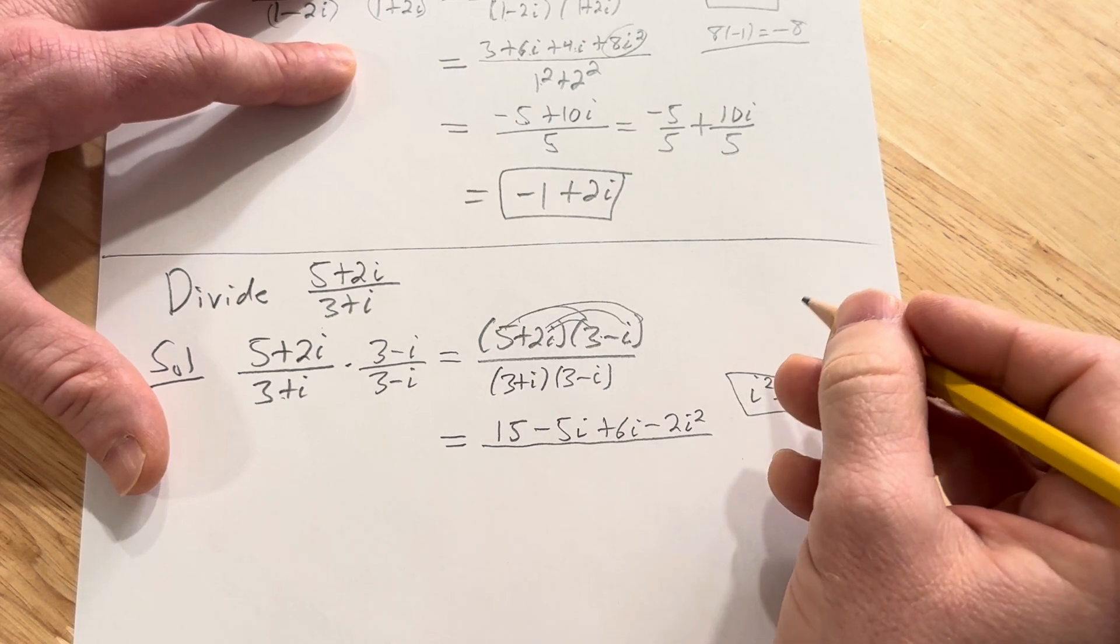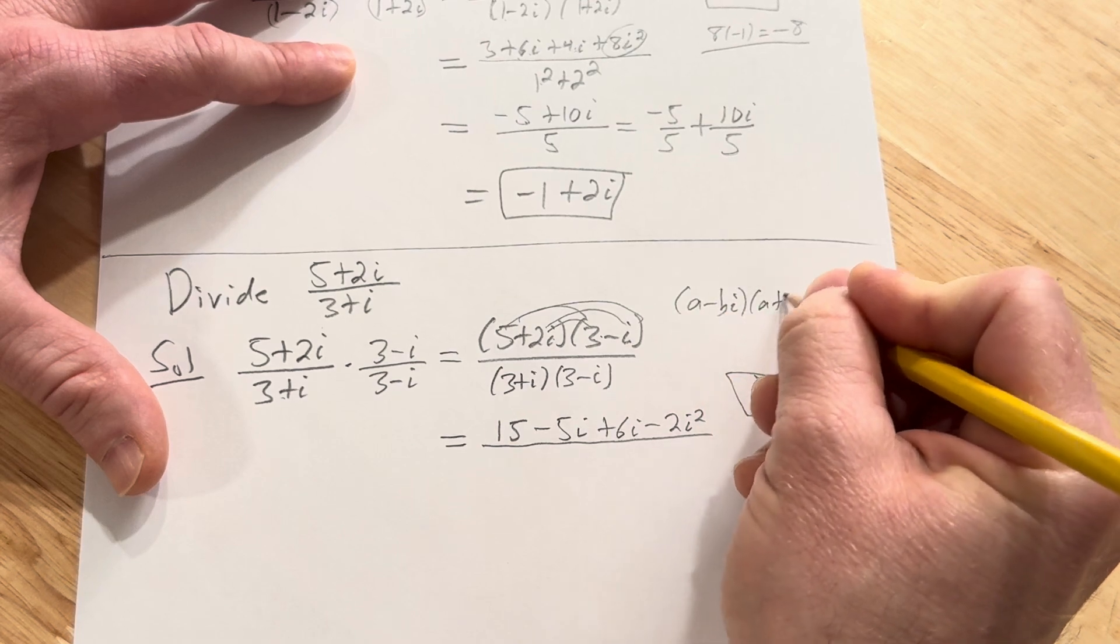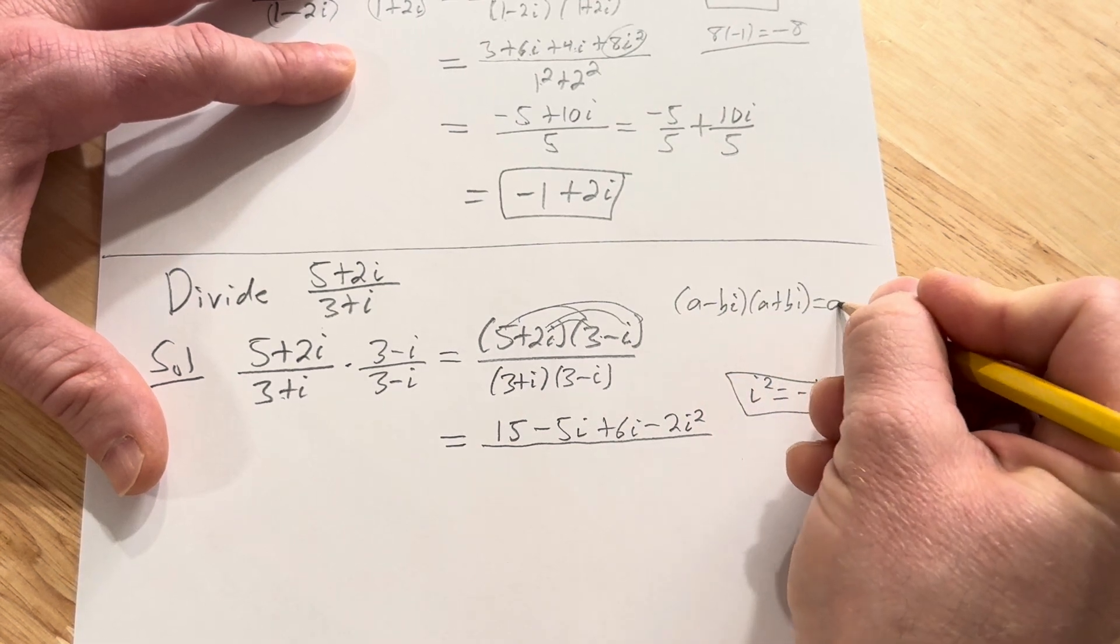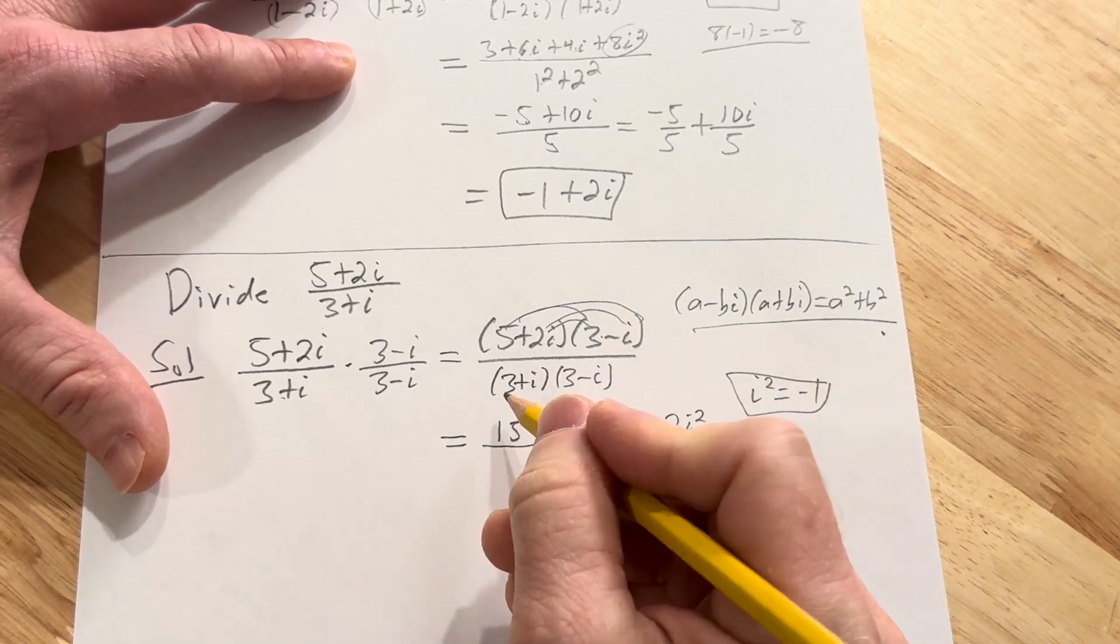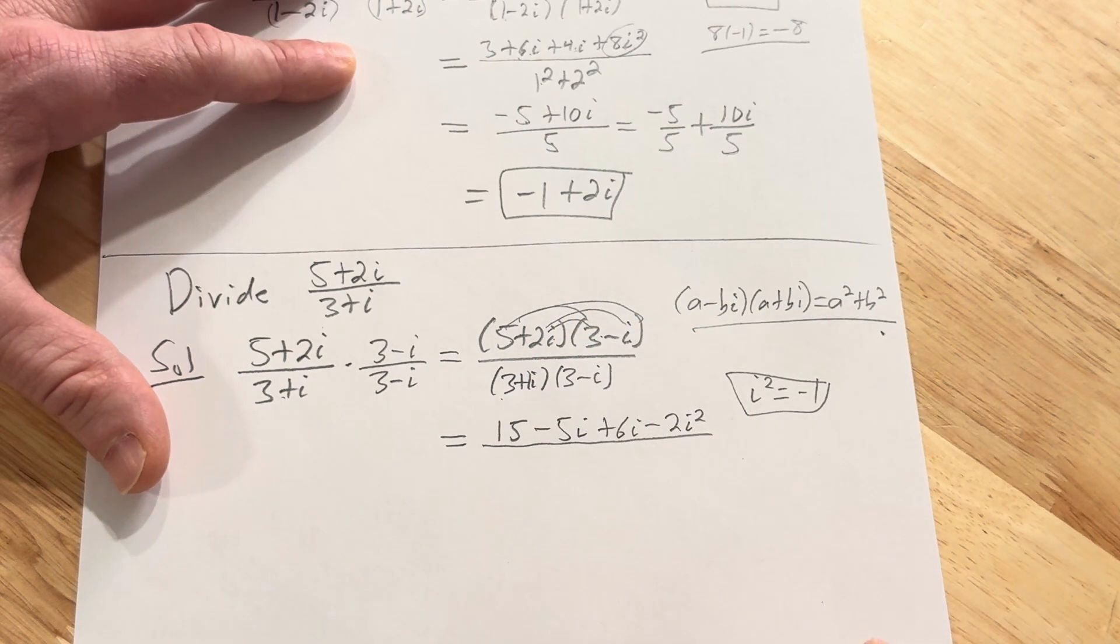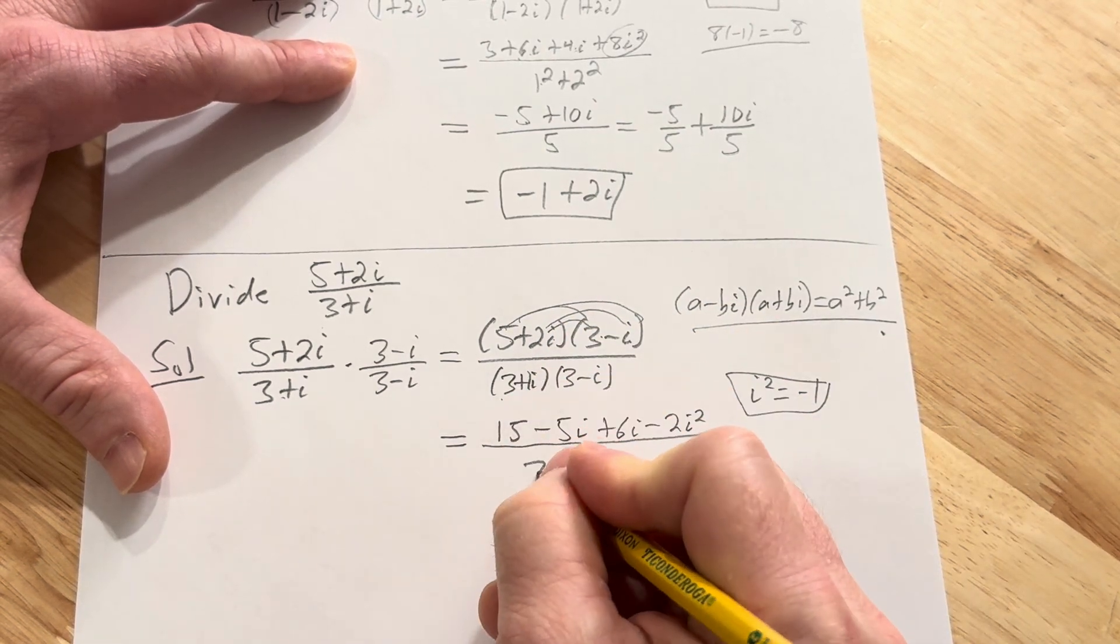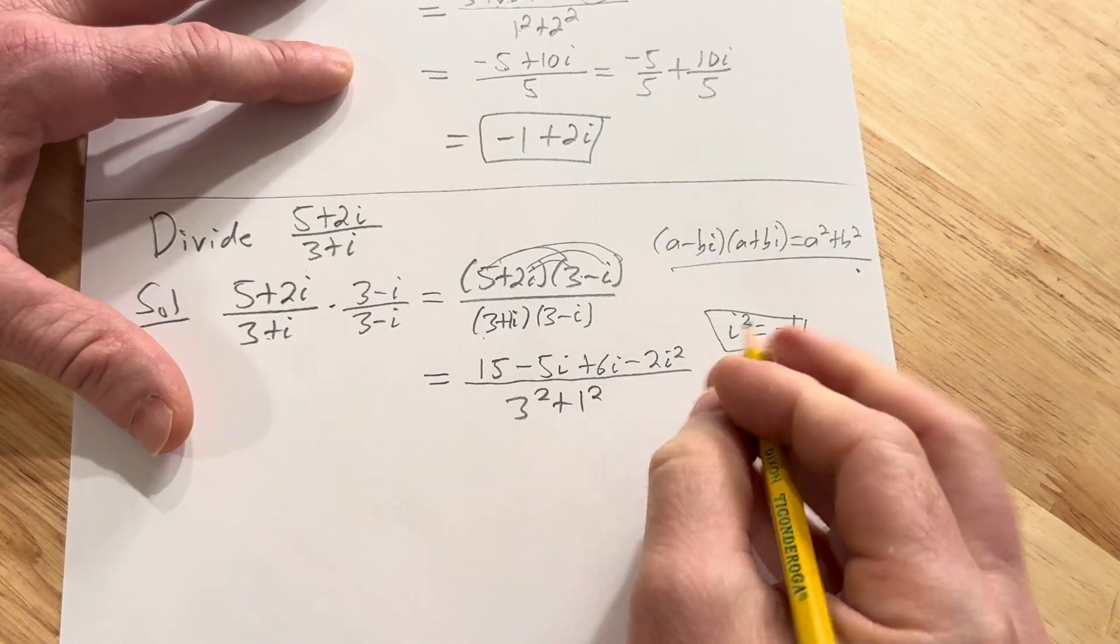But remember, i squared is equal to negative 1. And let's not forget our super powerful formula which says that if you have a minus bi times a plus bi you get a squared plus b squared. Now we're going to apply that to the denominator. So a is 3, b is 1 here. So it'll be 3 squared plus 1 squared. Just like that. Perfect.